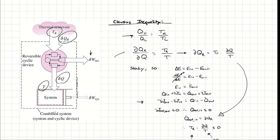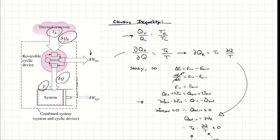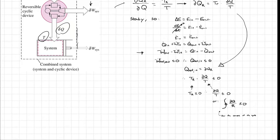Since this cycle cannot produce net work out — that is combining δW_reversible and δW_system — those cannot be a net work output; otherwise I'm perfectly converting heat transfer into work, which would be a violation of the second law of thermodynamics. Therefore, this process must have a net heat transfer in that is less than or equal to zero. Because the net work out must be less than or equal to zero, and the net work out equals the net heat transfer in, that must also be less than or equal to zero.